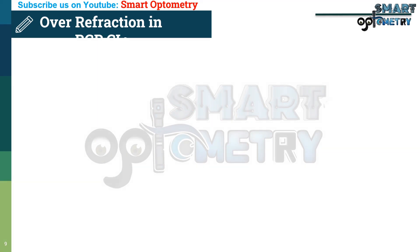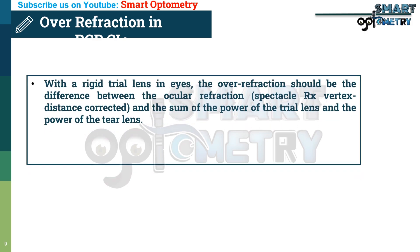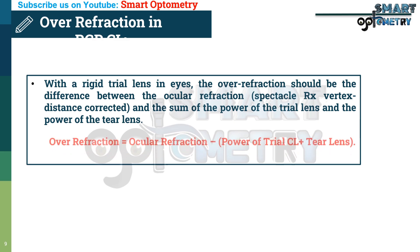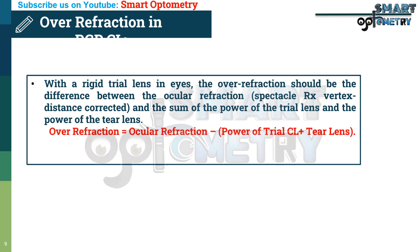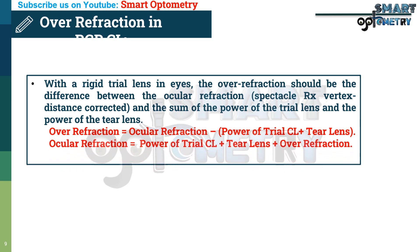Over-refraction in rigid contact lens: with a rigid trial contact lens in the eye, the over-refraction should be the difference between the ocular refraction and the sum of the power of the trial contact lens and the power of the tear lens. Over-refraction = ocular refraction minus (power of trial contact lens + tear lens). Therefore, ocular refraction = power of trial contact lens + tear lens + over-refraction.